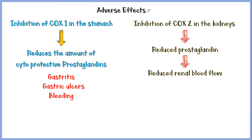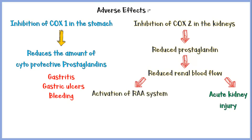Reduced renal blood flow may lead to acute kidney injury. Not only that, reduced renal blood flow will activate the renin-angiotensin-aldosterone pathway, and this will lead to hypertension.